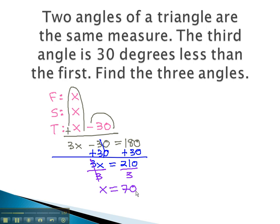Going back to our original labels, we can quickly find our 3 angles. The first angle is simply x, 70 degrees. The second angle also is simply x, 70 degrees.